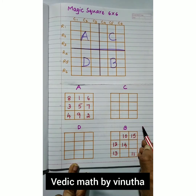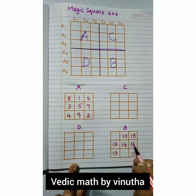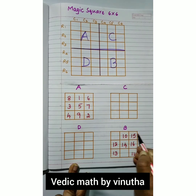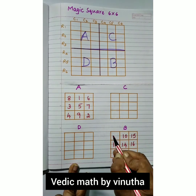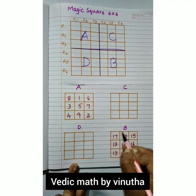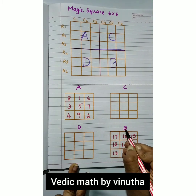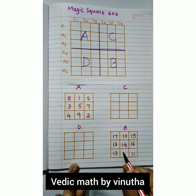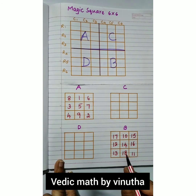Place 13, then move diagonally for 14 and 15. For 16, there is no box available, so go just right below 15 to place 16. Move diagonally for 17, then go to the row end to place 17. For 18, move diagonally and go to the column end to place 18. That completes box B with the last number 18.